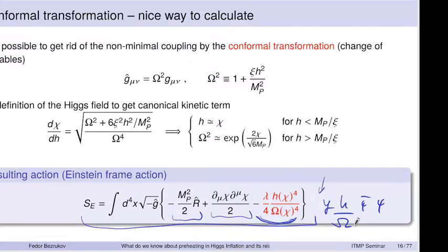Again, asking which frame is physical is not the right question — any frame is a choice of variables. The correct question is why your theory in any sense allows you to calculate. And we'll actually see in a moment that our theory is not that good.